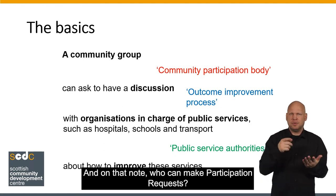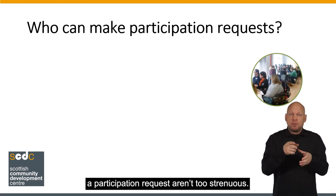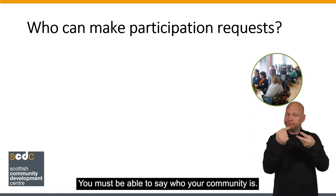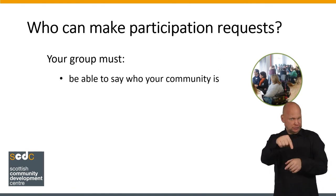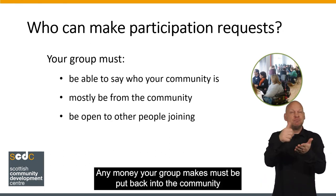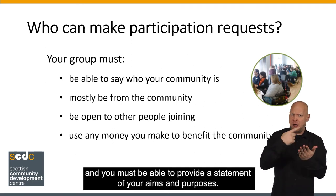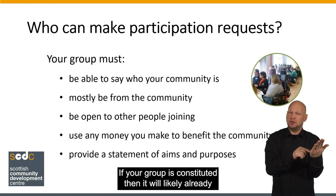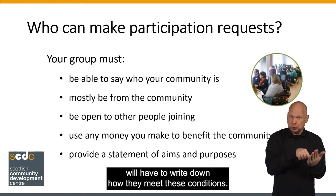Who can make participation requests? Fortunately, the criteria groups have to meet aren't too strenuous. All your group has to show is the following: you must be able to say who your community is; most of your group has to be from that community; you must be open to other people joining from your community; any money your group makes must be put back into the community; and you must be able to provide a statement of your aims and purposes. If your group is constituted, then it will likely already have most of this in the constitution. More informal groups that aren't constituted will have to write down how they meet these conditions.